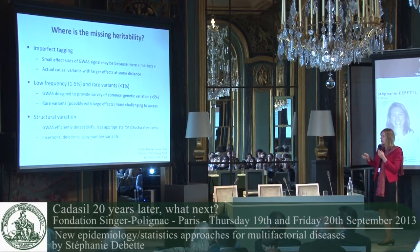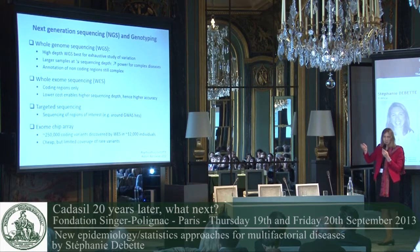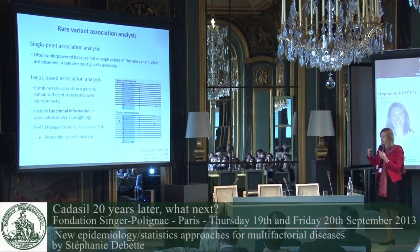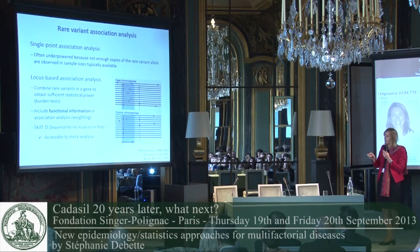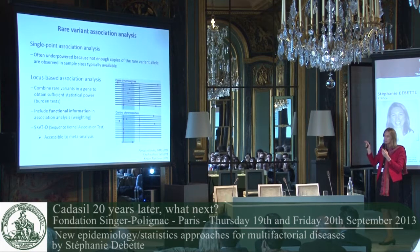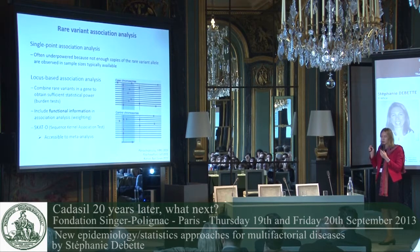Next generation sequencing has probably been the second major breakthrough for genetics of complex diseases after GWAS, because it enables much cheaper sequencing of larger samples. For the analysis of rare variants, more elaborate statistical techniques need to be used because of the lower power due to the low frequency of the variants studied. Rare variants tend to be combined within a gene to obtain sufficient power, and it is also possible through certain methods to include functional information and give more weight to variants that have more functional importance.